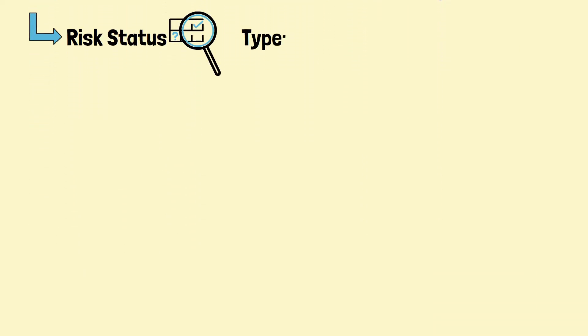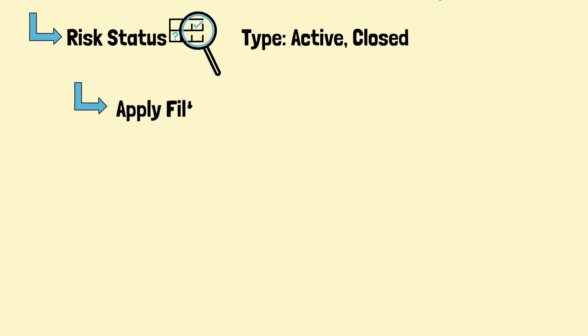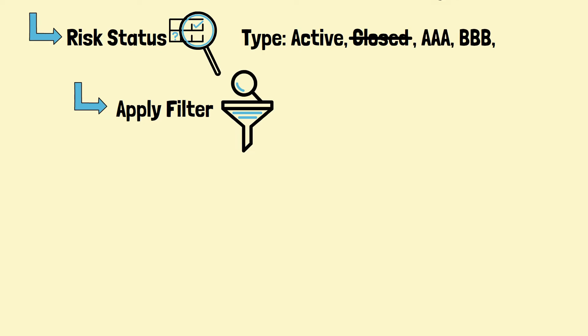Risk status is required. You can tag it as active or closed. The team can use a filter to hide the closed risks and work on the active ones. If you need more categories of risk status, you have the freedom to add. For example, if you want to filter out the risks that you will accept without any risk response, you can add an accept risk status.